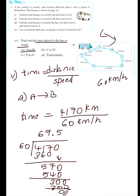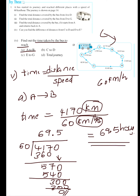Since the speed is in km per hour and distance in km, our answer is in hours. So 69.5 hours is our answer for part A — that is the time taken by the bus to reach from A to B.